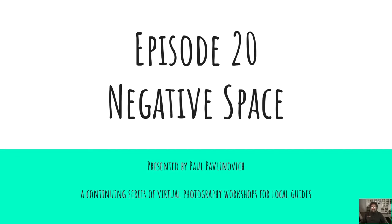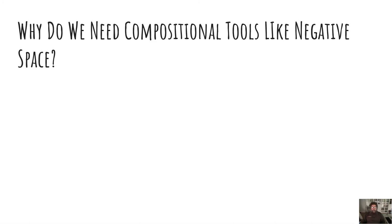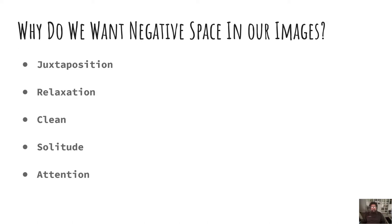Here we go with episode 20: negative space. We need compositional tools like negative space to help us convey a story. Our world is noisy and distracting; we need to draw attention to our subjects by bringing them into the foreground. We use tools like negative space along with other things such as the rules we've talked about in previous episodes. We want to bring a juxtaposition to our hectic lives and introduce the feeling of relaxation.